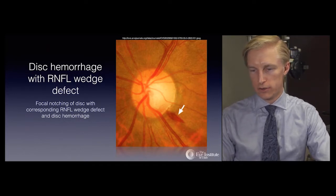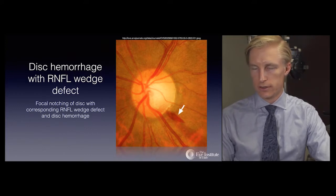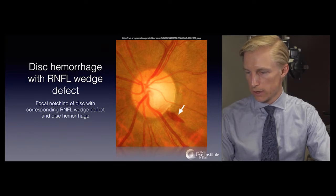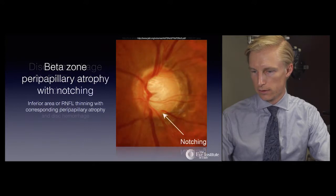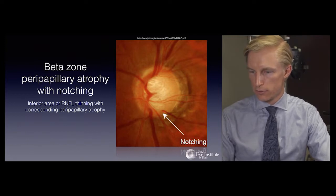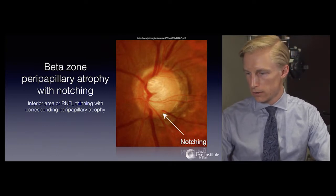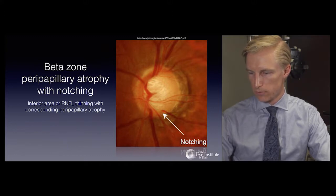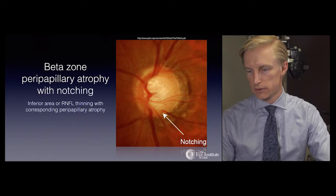This shows a disc hemorrhage with a corresponding RNFL wedge defect and area of focal thinning. We can see an inferior temporal notch to the neurofiber rim with a corresponding wedge defect and loss of nerve fiber layer in the same area as the disc hemorrhage. The next example shows beta zone peripapillary atrophy with notching, and alpha zone peripapillary atrophy also present, which is essentially normal. The beta zone atrophy is inferior to the nerve, with an arrow depicting the area of notching.